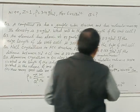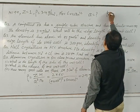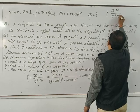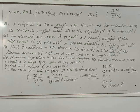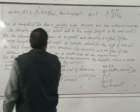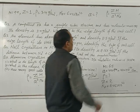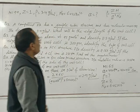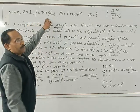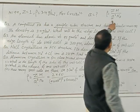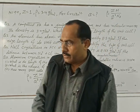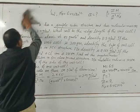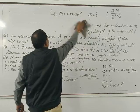Substitute the values in the formula: rho equals Z times M divided by A cubed times N. A can be calculated from this and the result comes in centimeters, because the density is given in grams per centimeter cubed.